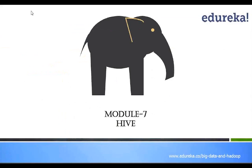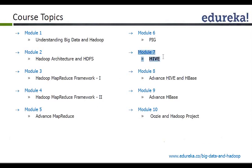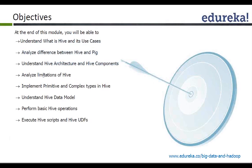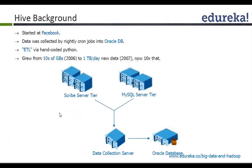So now let's quickly touch base with what is Hive. We are in module number 7, and we are going to talk about Hive at a very high level. We'll see what is Hive, the differences between PIG and Hive, look at the Hive architecture and components, limitations of Hive, how to work with different types in Hive, data model, operations, and executing Hive scripts and Hive UDF — this is what we are going to see in this module.